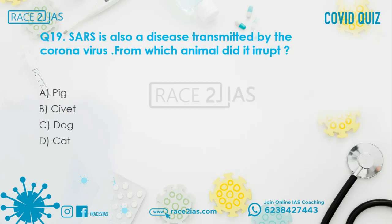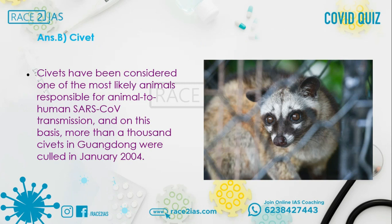Question number 19: SARS — from which animal did it erupt? Option A: Pig. Option B: Civet. Option C: Dog. Option D: Cat. The right answer is Option B, Civet. The civet has been considered one of the most likely animals responsible for animal-to-human SARS-CoV transmission. On this basis, more than a thousand civets in Guangdong were culled in January 2004.